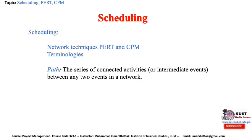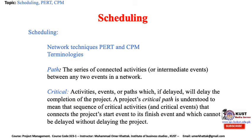Paths — the series of connected activities or intermediate events between any two events in a network. Critical — activities, events, or paths which, if delayed, will delay the completion of the project. A project's critical path is the sequence of critical activities and critical events that connects the project start event to the finish event and which cannot be delayed without delaying the project.